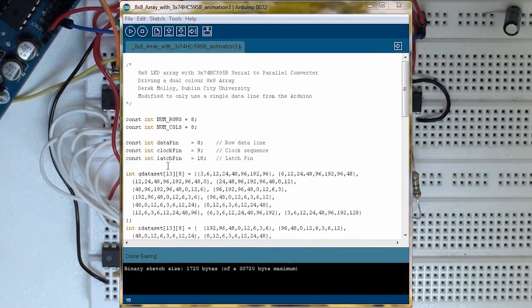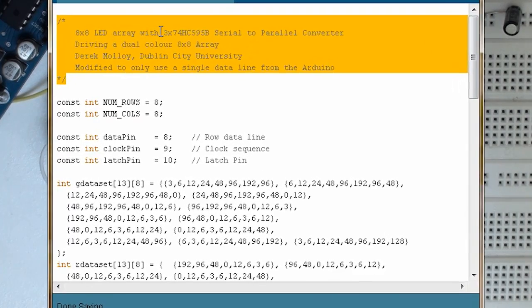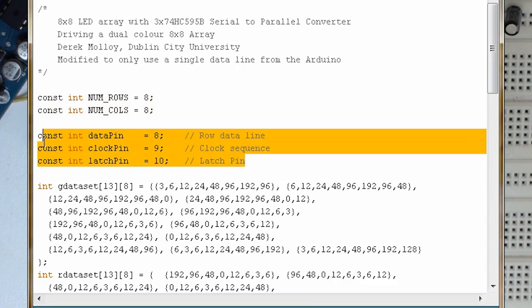So on to the code itself. This is the code that we place on the Arduino to drive the display and create the animation effect on the LEDs. The first thing we can see is that we are using one single data output pin which is different than the circuit that I showed you before. You also see we define an 8x8 array and we set up our data pin, clock pin, latch pin on pins 8, 9 and 10. So we are only using 3 wires from the Arduino to drive this display.